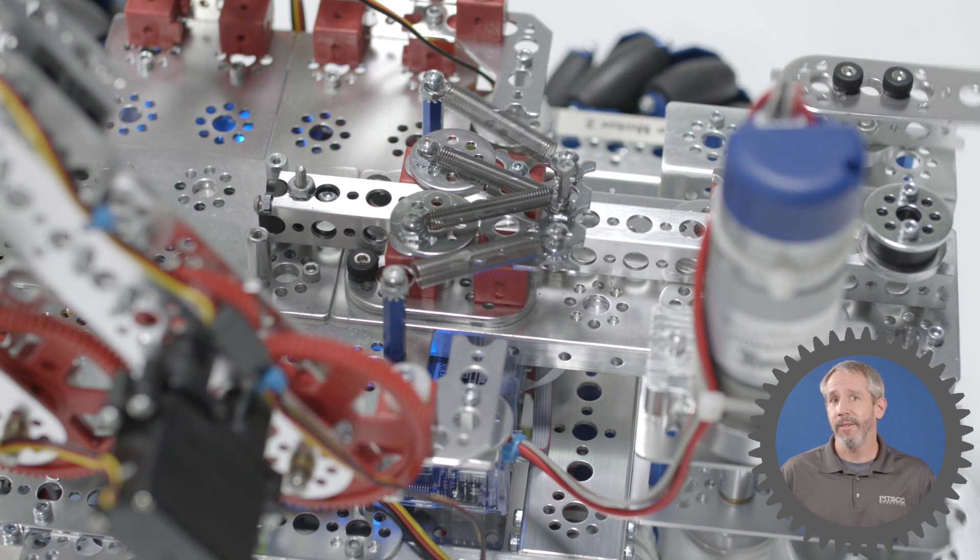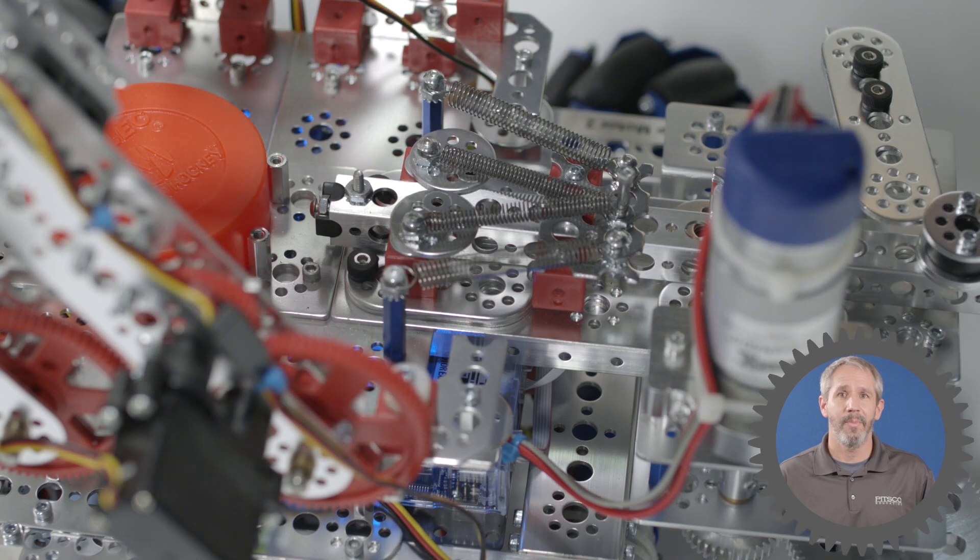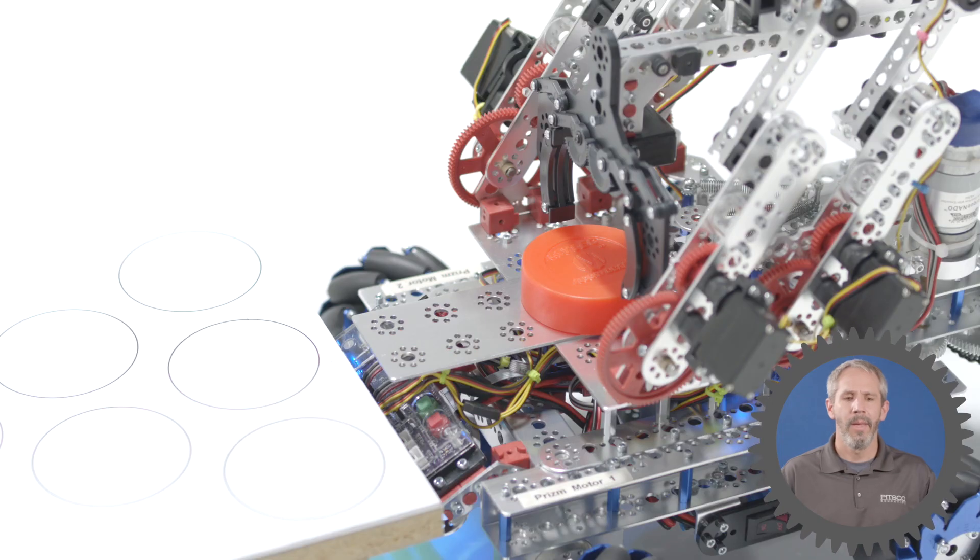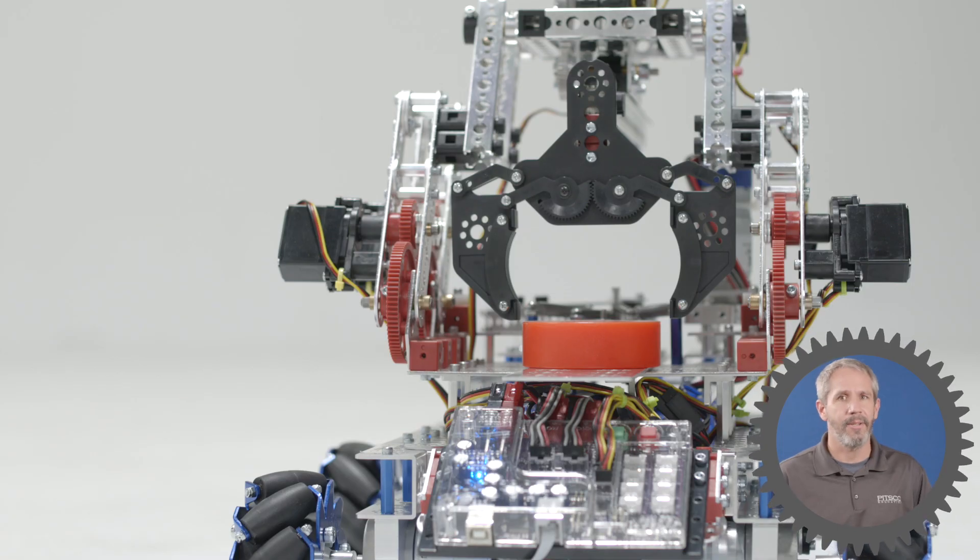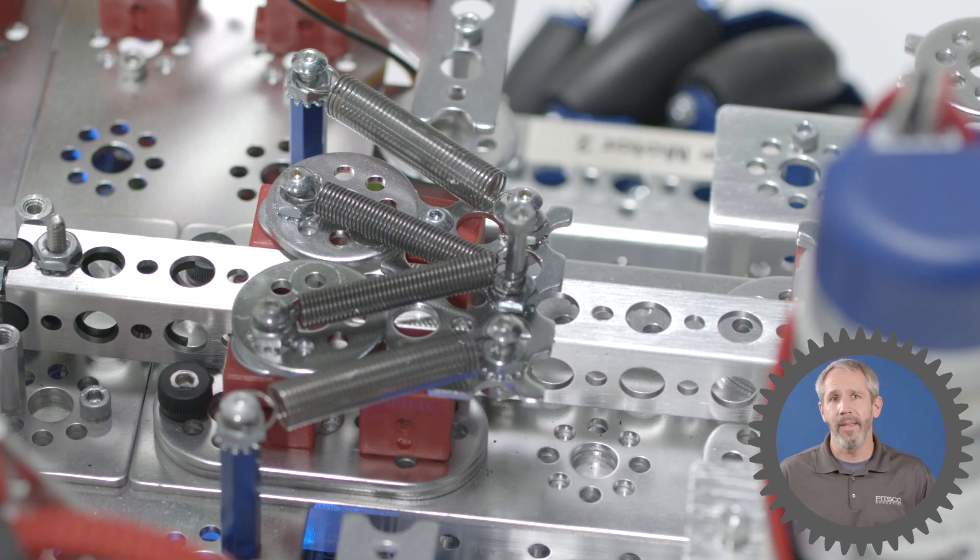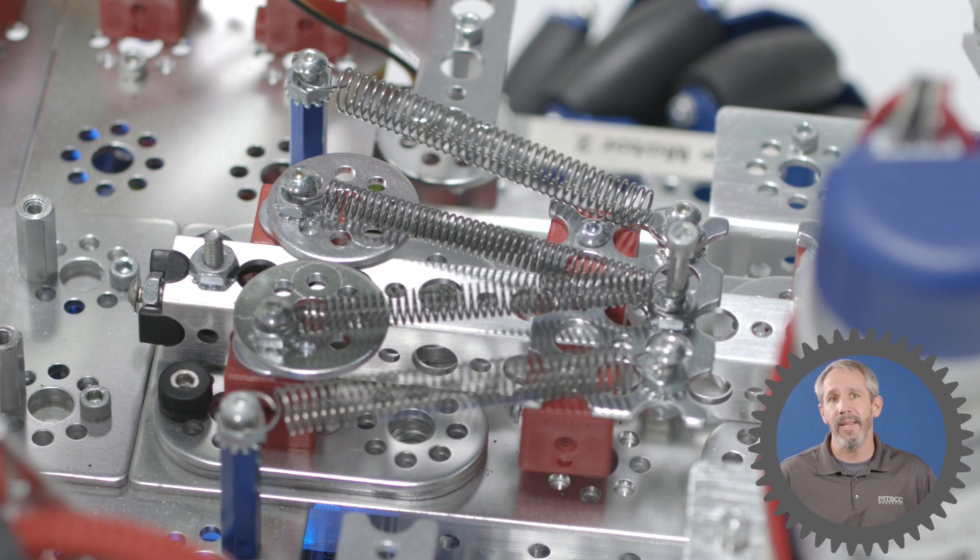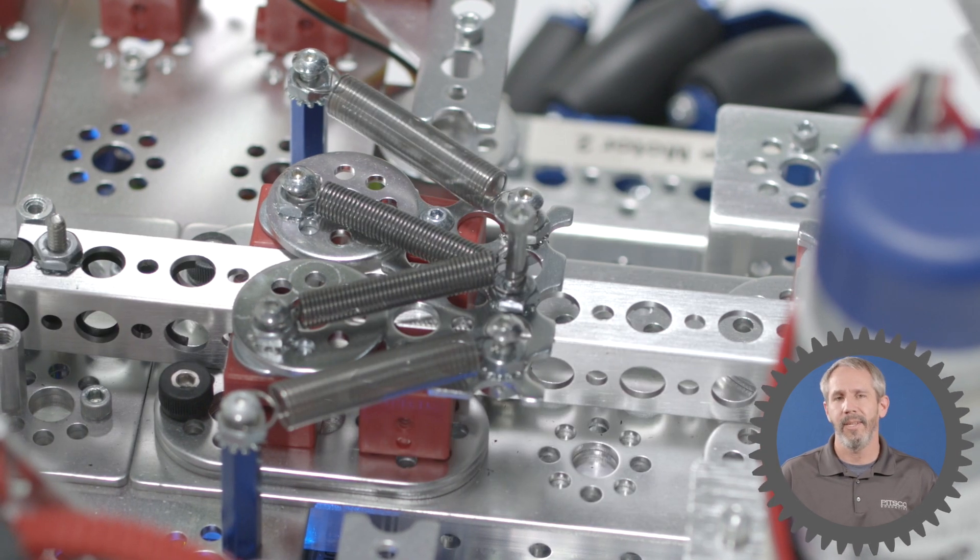There are several advantages to using a striker system such as this. For example, you can shoot other objects besides balls or objects that are round. You could shoot square objects if you needed to. Another advantage is that it's good at shooting objects that have to slide across a surface, and then you can determine the distance that the object needs to slide by adjusting the spring tension.